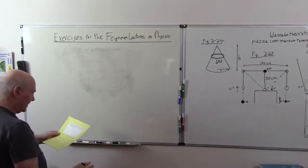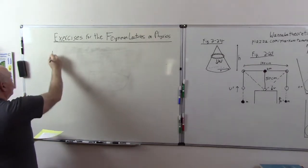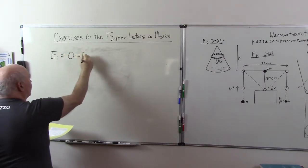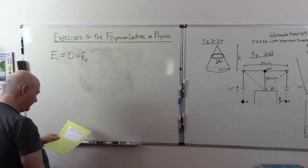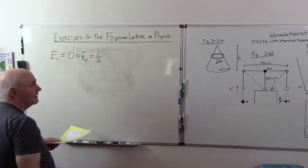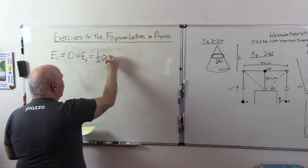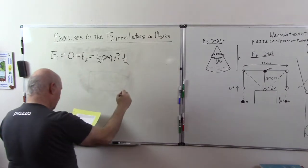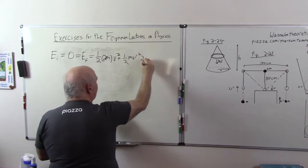Initially all the masses are at rest and we'll measure the potential energy from where they start. So the initial energy is equal to 0, and this equals the final energy because energy is conserved — there's no friction, we have conservative gravitational forces. The final energy is just going to be equal to one half times 2M times V squared, plus one half times M times V prime squared. There are two side masses, so we multiply by 2.